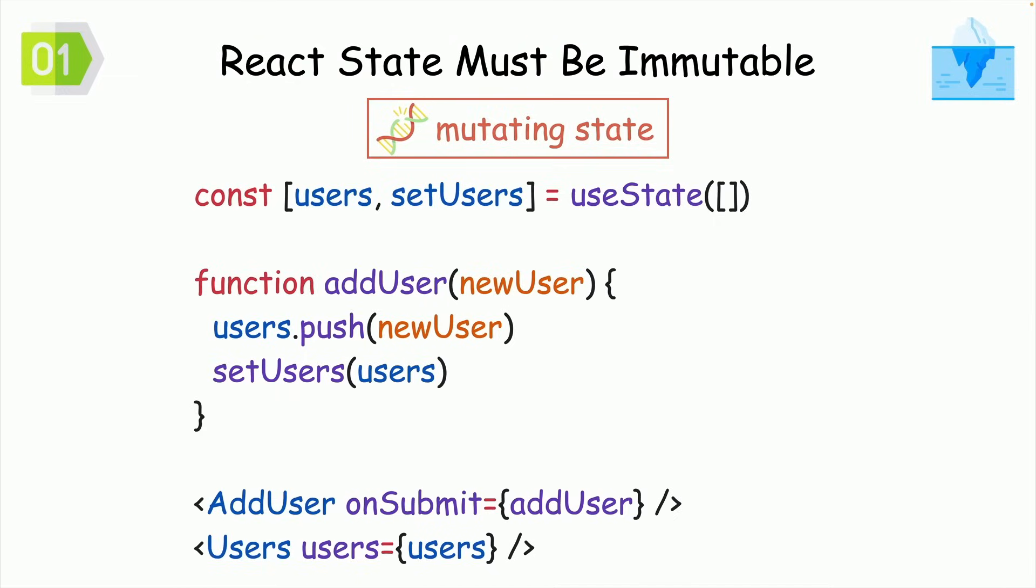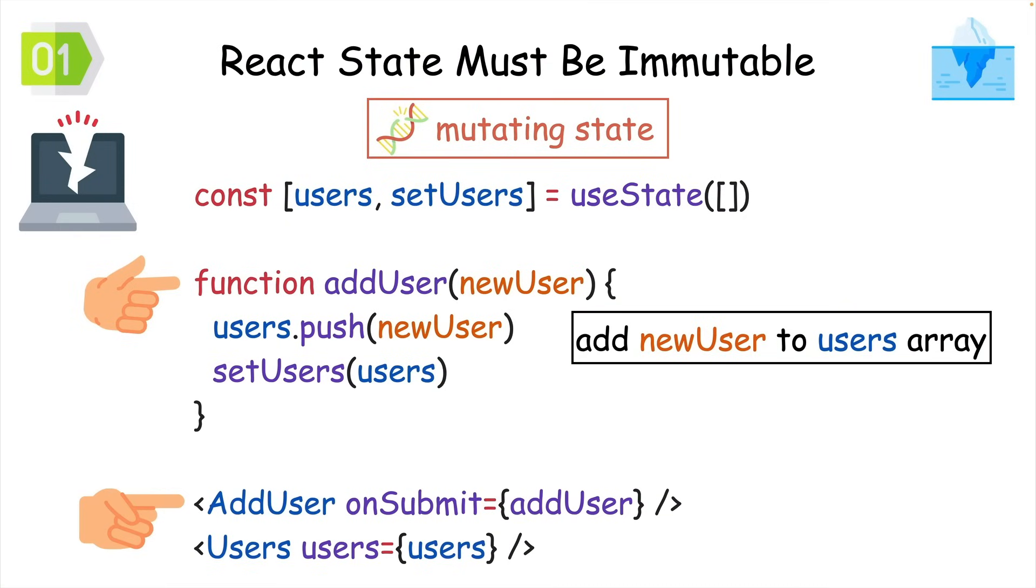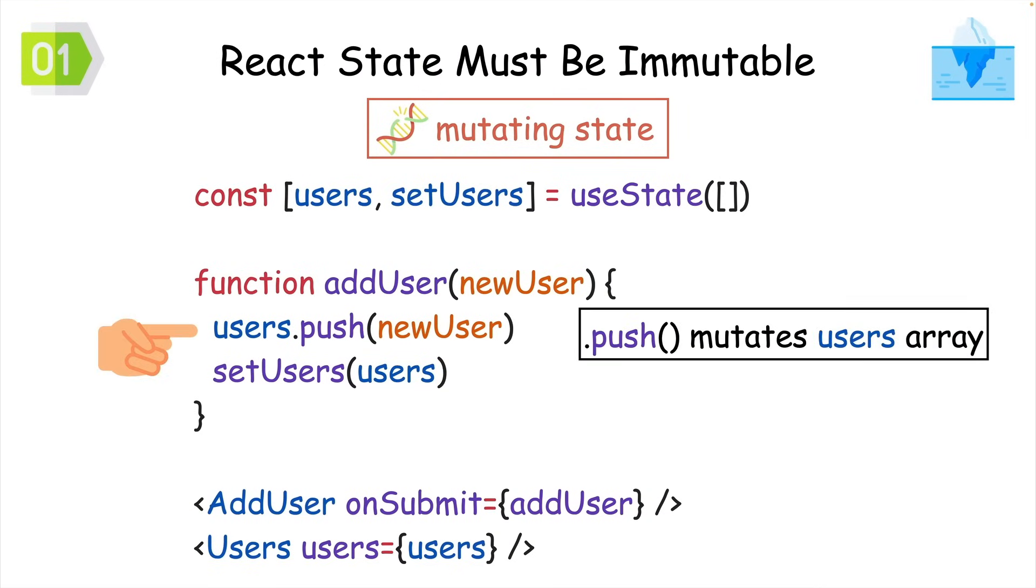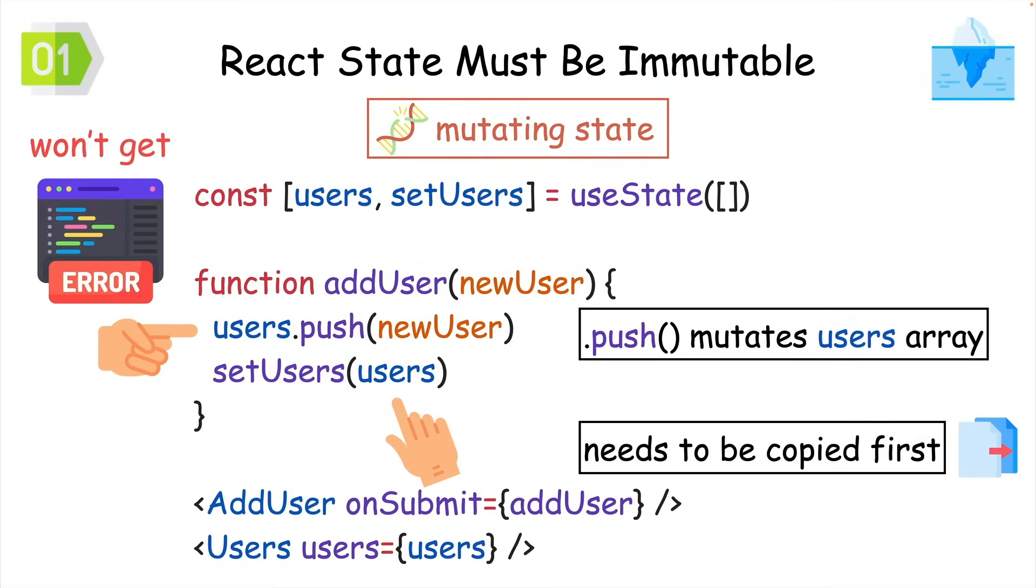So now you can see why this code won't work. We're adding a new user to state and then showing that user. But adding a new user won't cause our component to re-render. This is because the push method performs a mutation. It doesn't create a copy of the original user's array. This won't cause an error, but nothing's going to happen.